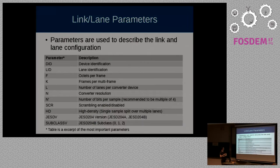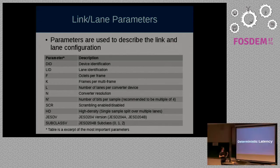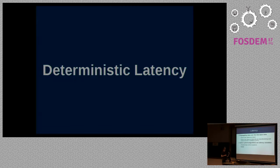A link or lane has many configurable parameters — more than are shown on any one slide — which tell both the sender and the receiver how data is transmitted over the link.